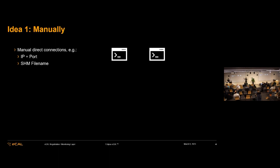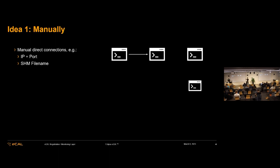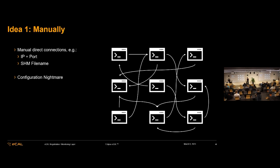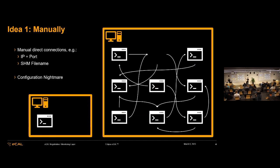The most primitive way of drawing these green lines is by hand — creating a config file, hard-coding an IP and port in your application to address the receiving side, or addressing it via a shared memory file name. But if we scale that up and still have to draw every line ourselves, this pretty quickly becomes a configuration nightmare. It becomes even worse if we move one part of our algorithm to another PC and then have to reconfigure the entire system. We come from a rapid prototyping environment, and reconfiguration isn't very rapid if you have to do it manually.